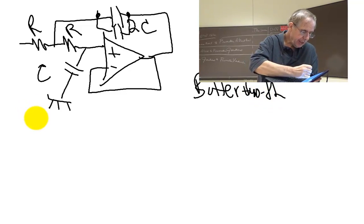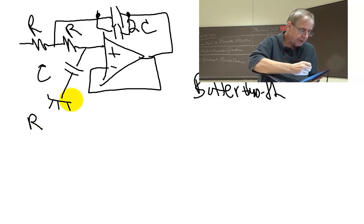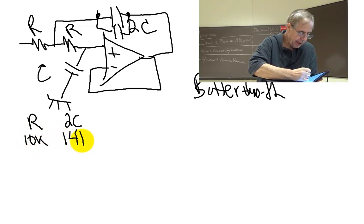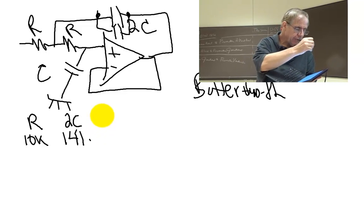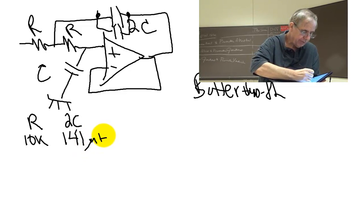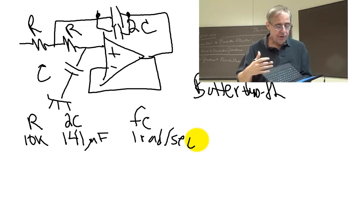This particular filter with the capacitor at 10k and the resistor at 10k and the capacitor at 141 microfarad will actually pass a cutoff for frequency of one radian per second. And that's pretty slow and not useful.